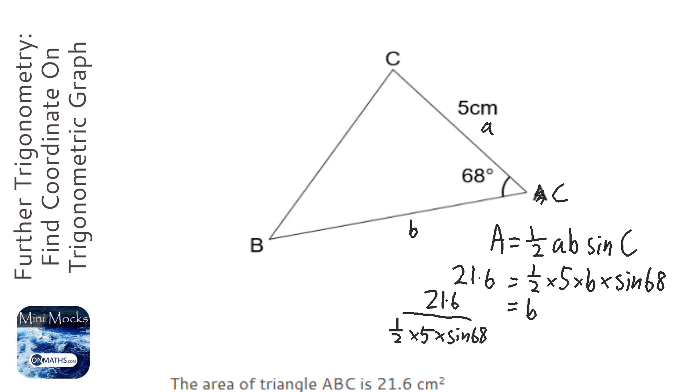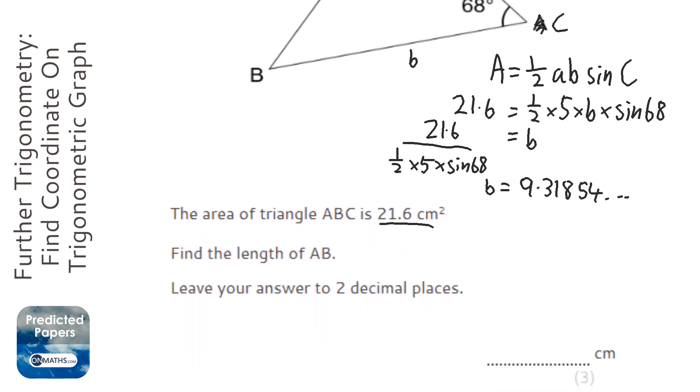I'm going to type that into my calculator: 21.6 over 0.5 times 5 times sine 68. It gives me b equals 9.31854, and it says to round to two decimal places, so 9.32.